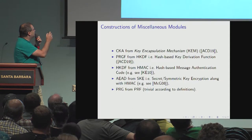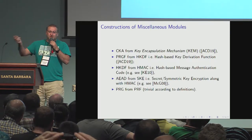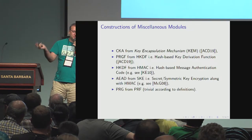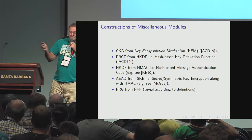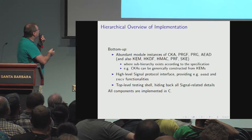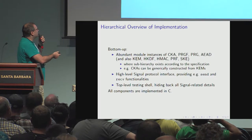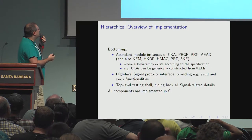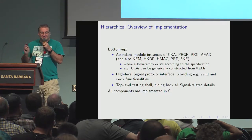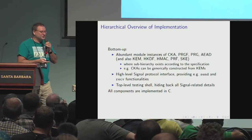We also showed extensive constructions of various blocks from simpler blocks. Following down the tree, you literally have dozens of possibilities for Signal depending on what hash function, stream cipher, or public encryption you like. This is apparent from the code. We had a bottom-up way to implement this library — you can plug in all kinds of components: continuous key agreements, hash functions, PRG, and so on. It's all open source, so please improve it.